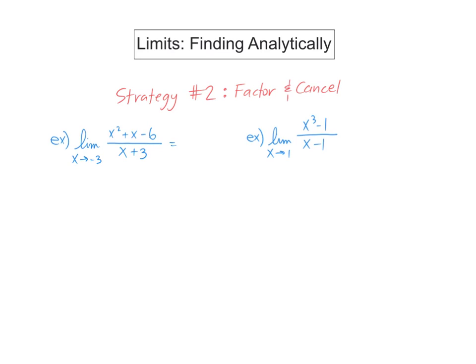But if I just sub in directly, 0 over 0. This is called indeterminate form, meaning I can't tell anything. 0 over 0 is not equal to 1. I cannot stress that hard enough. 0 over 0 does not equal 1. What I have to do is factor and cancel.